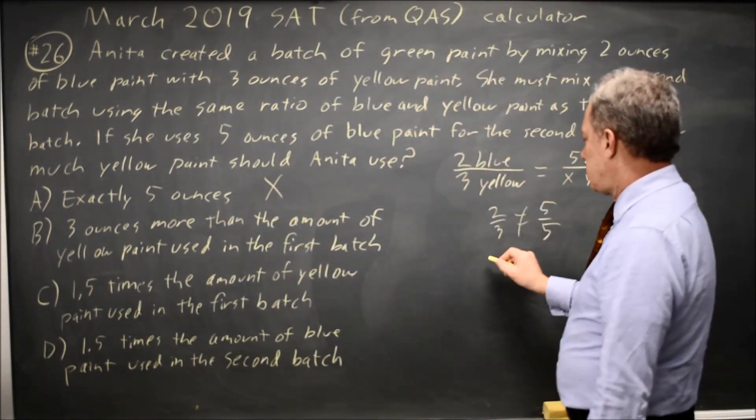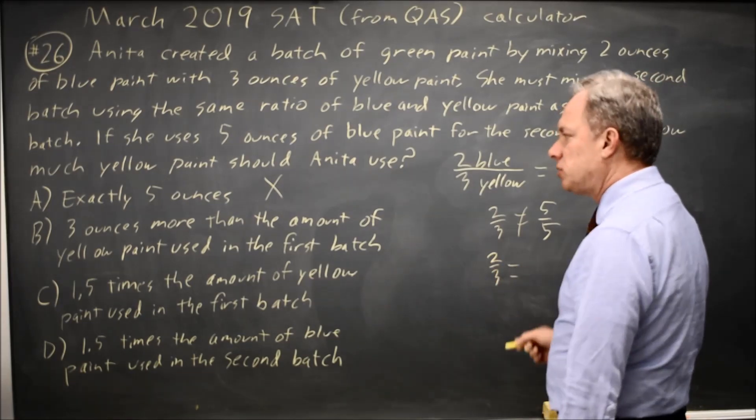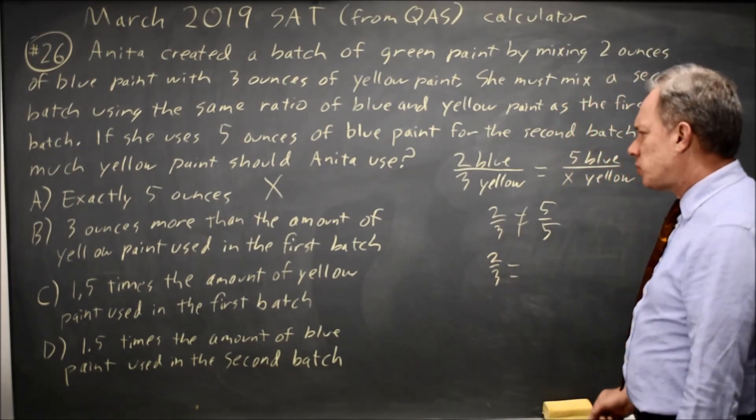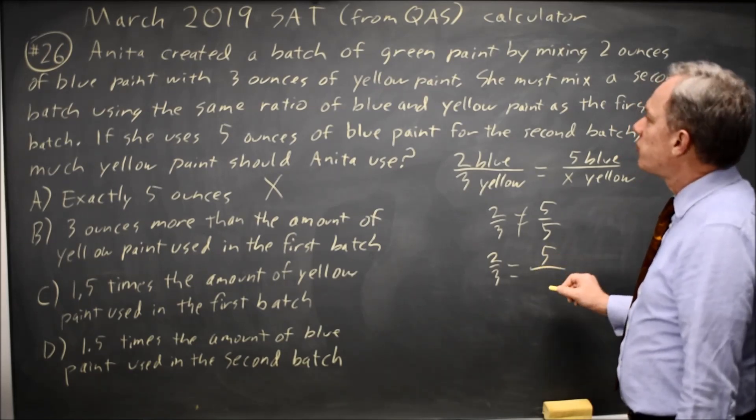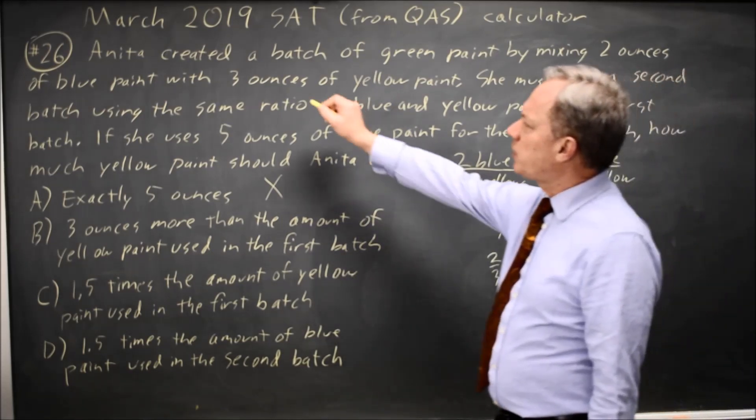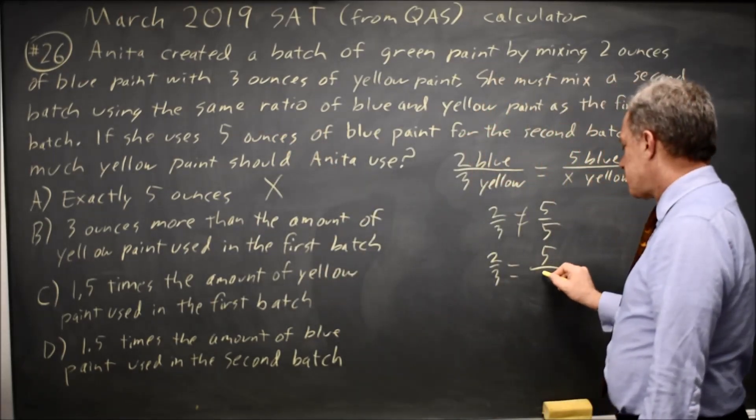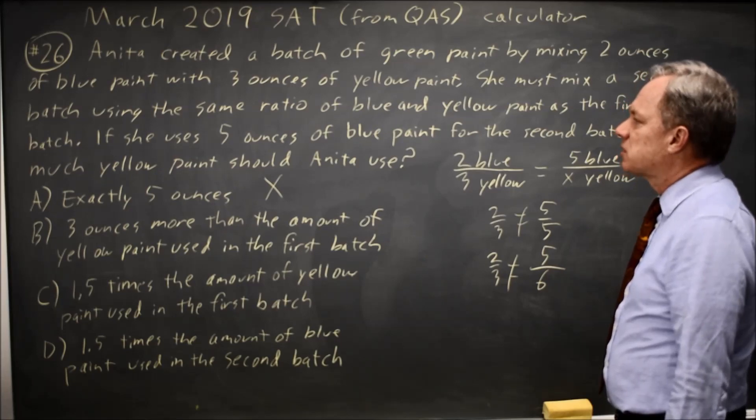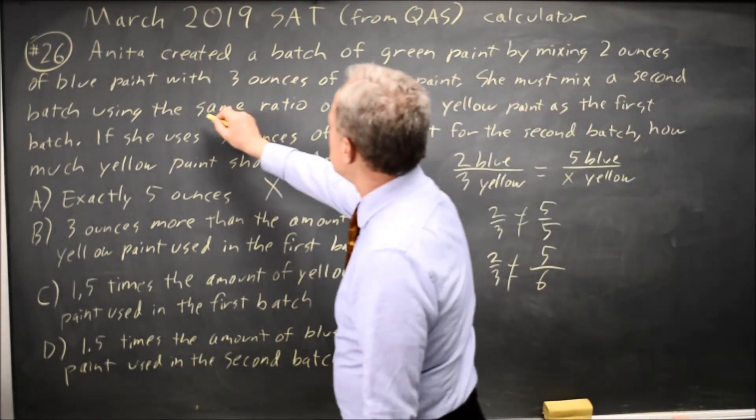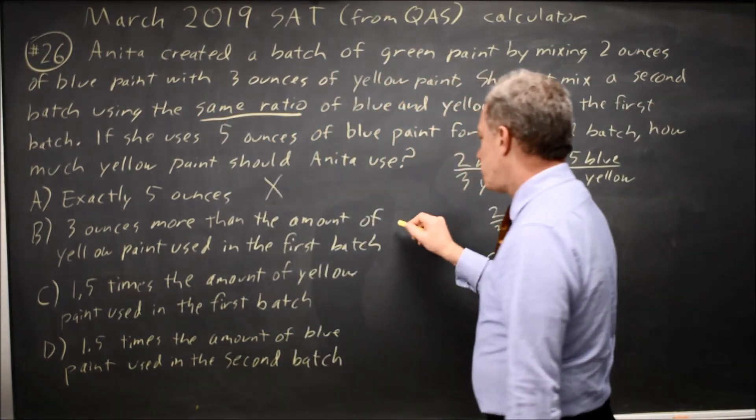What about choice B? Is 2/3 equal to 3 ounces more than the amount of yellow in the first batch? So still 5 blue, but we had 3 yellow and now we're going to have 3 more. So 3 plus 3 is 6 and 2/3 is not equal to 5/6. So that is not the same ratio of blue and yellow. Choice B is wrong.